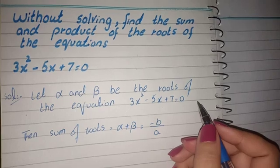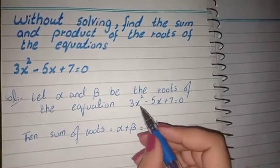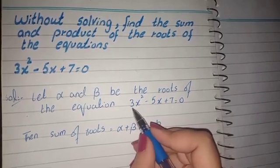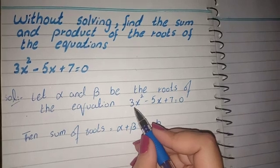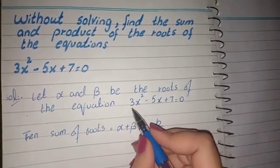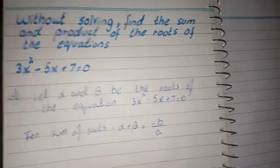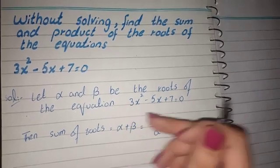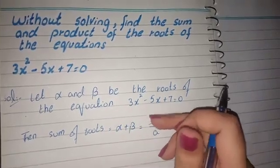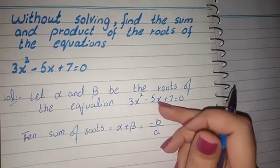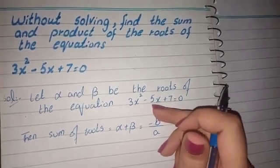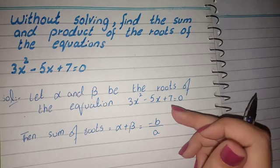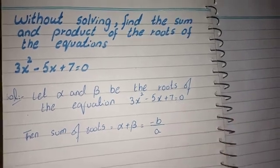In this equation, the x² coefficient is 3, so a equals 3. The x term coefficient is minus 5, so b equals minus 5. C equals 7, the constant term.